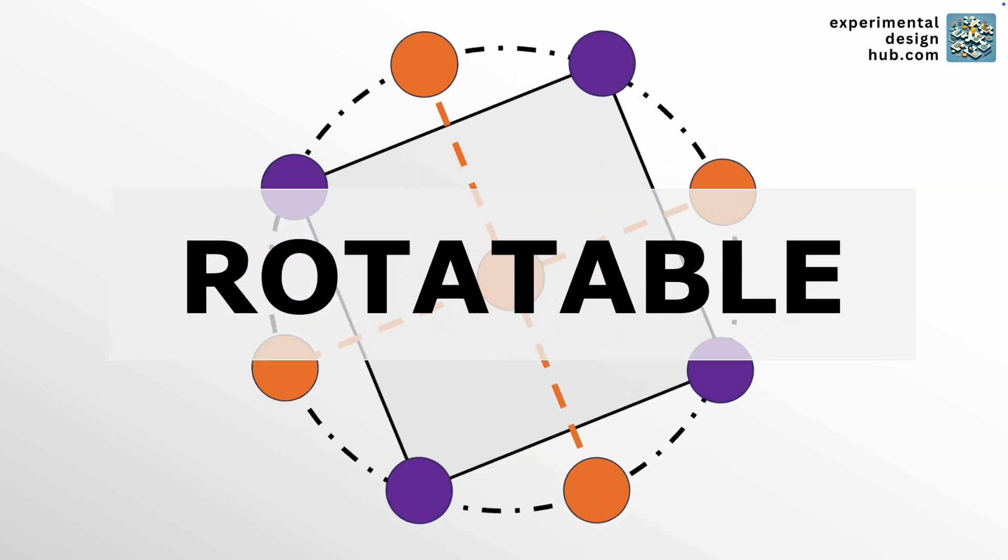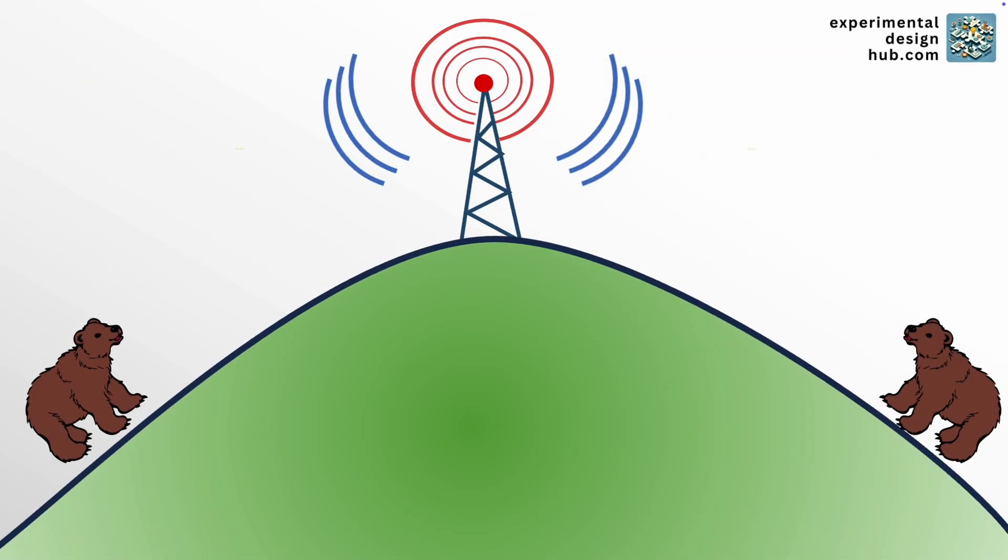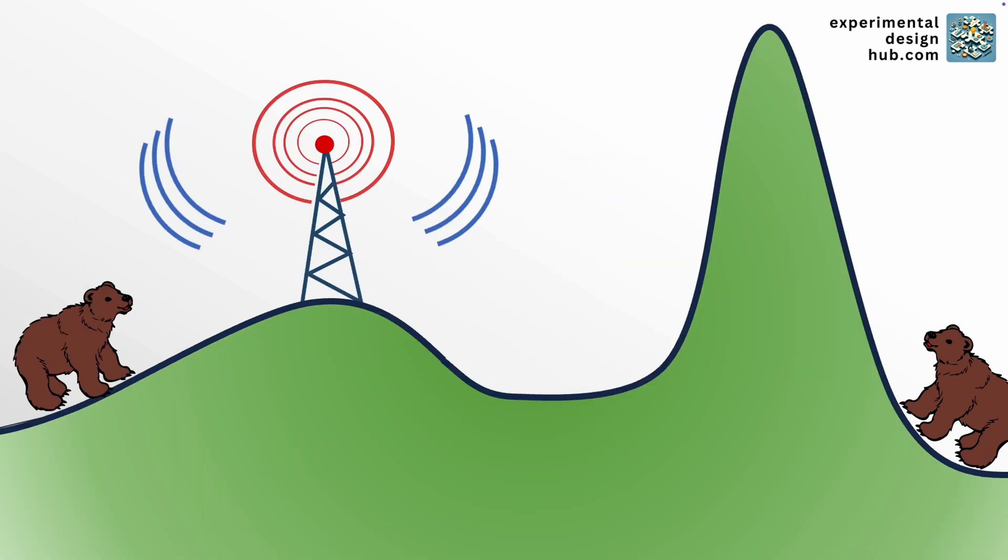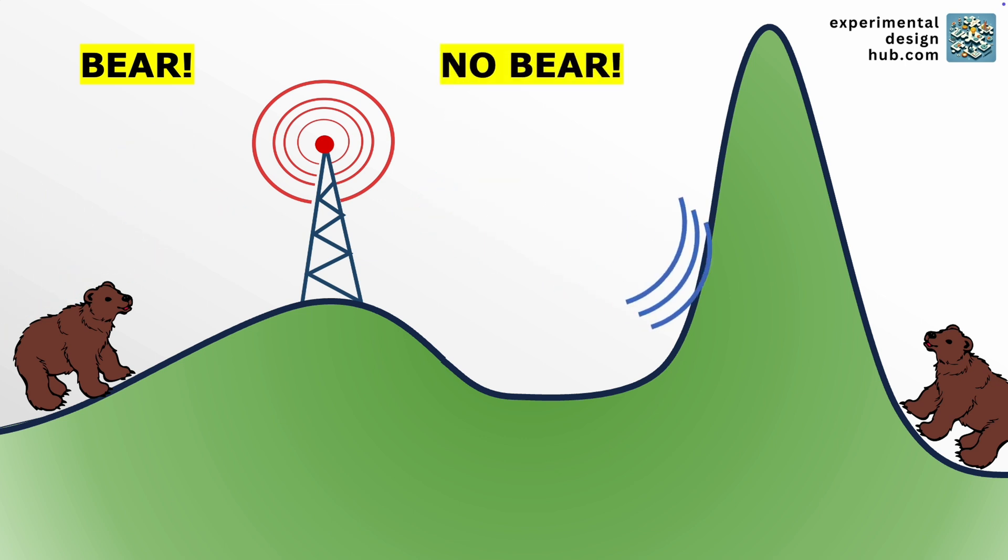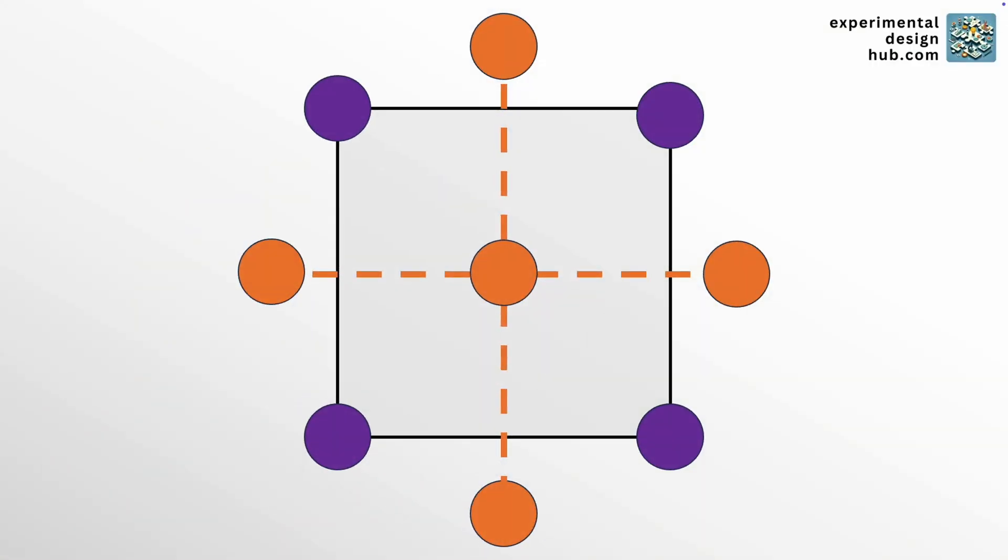Imagine an antenna that is sending a signal. If the design is rotatable, the signal you receive has the same strength in all directions. But if it's not, some points receive a clearer signal than others. And the predictions that you make in the areas that receive a clearer signal would be more reliable than those where you receive a weaker signal. And the distance of the axial points from the center of the design is called alpha.